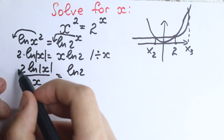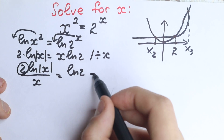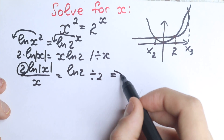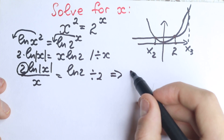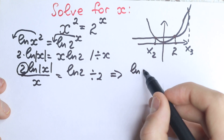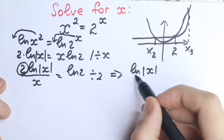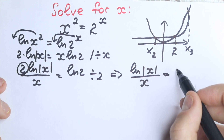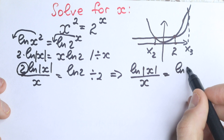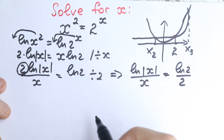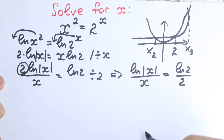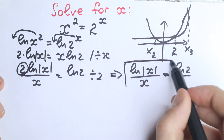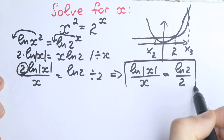We still have the constant 2 on the left, so let's divide both sides by 2 once more. As a result we have our expression: natural log |x| over x equals natural log 2 over 2. This is a very important expression.